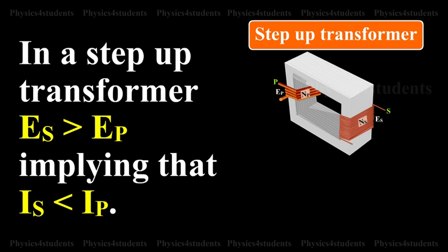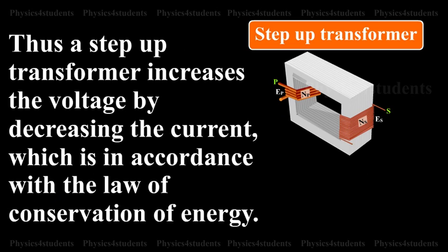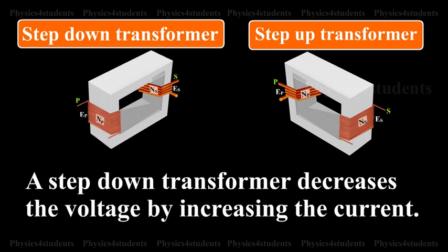In a step-up transformer, ES is greater than EP, implying that IS is less than IP. Thus, a step-up transformer increases the voltage by decreasing the current, which is in accordance with the law of conservation of energy. Similarly, a step-down transformer decreases the voltage by increasing the current.